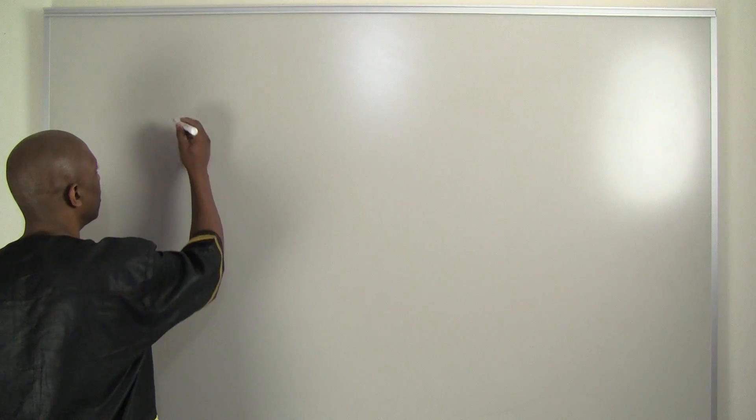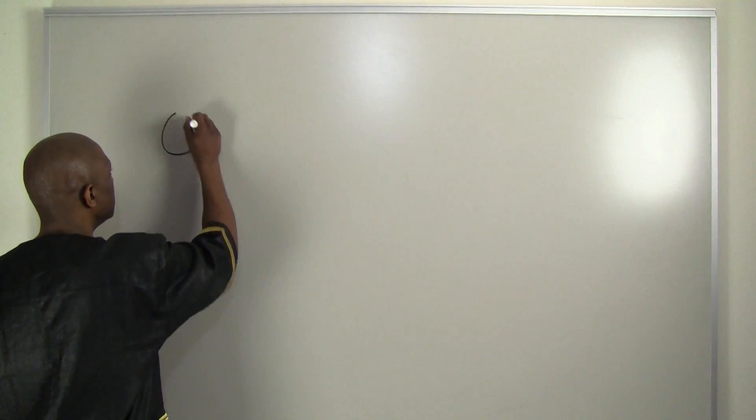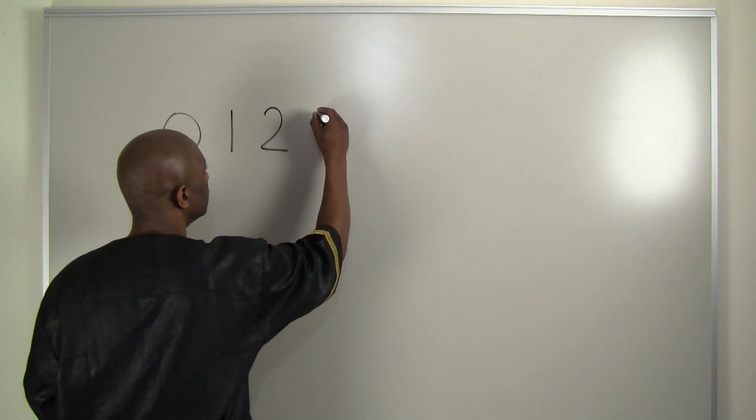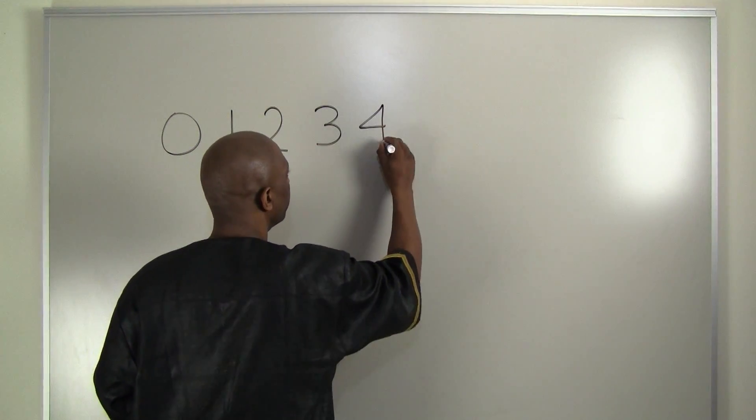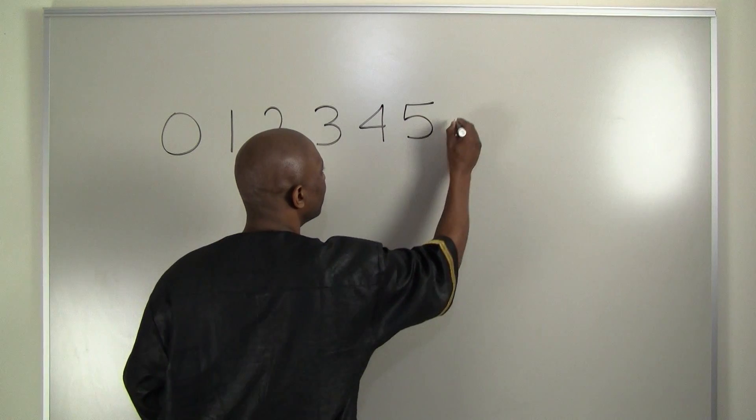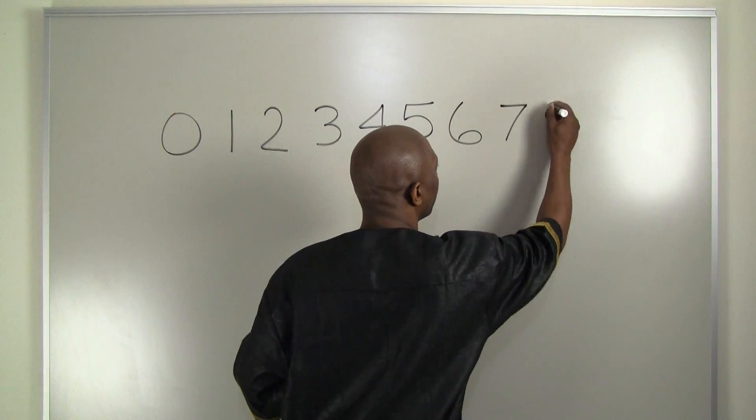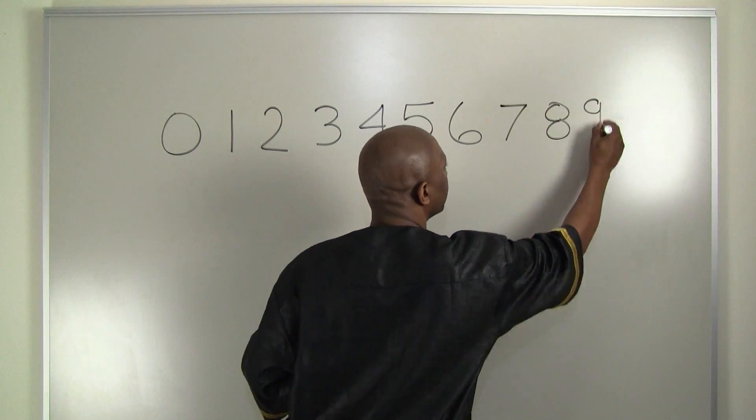Our current system, we use 10 symbols to represent any number that we really want. And those 10 symbols are 0, 1, 2, 3, 4, 5, 6, 7, 8, and 9.